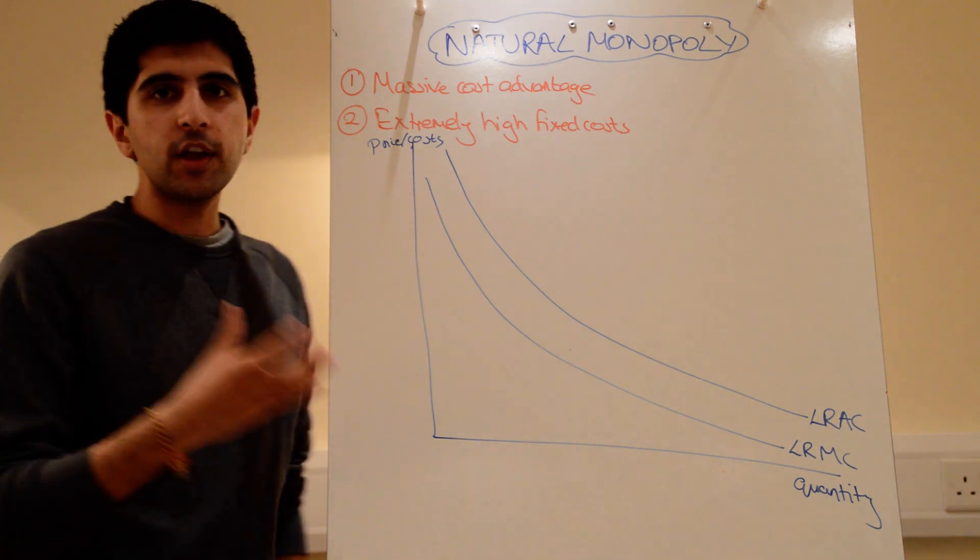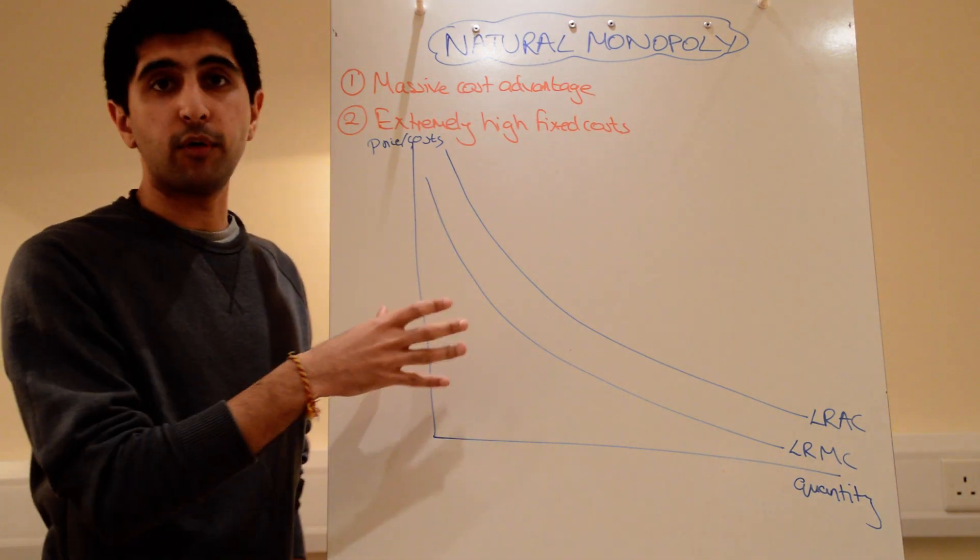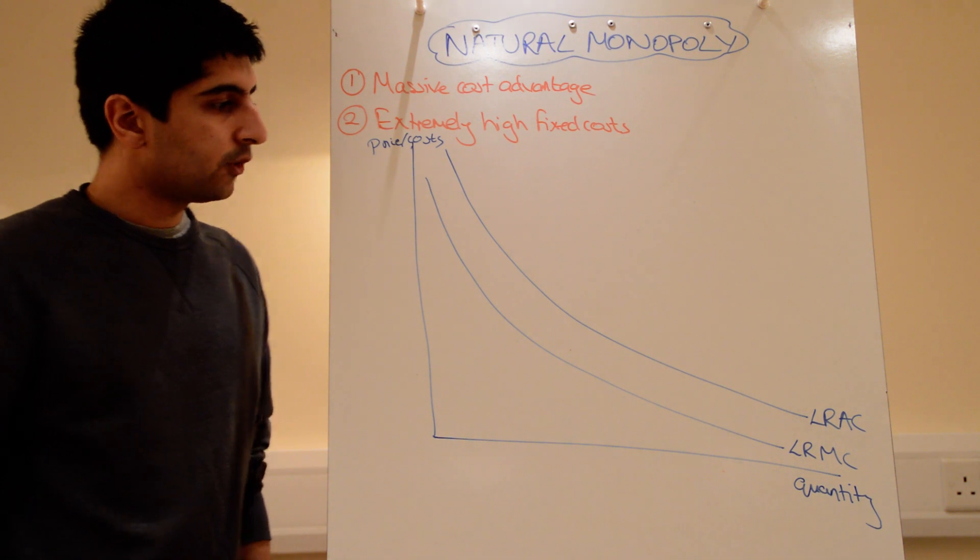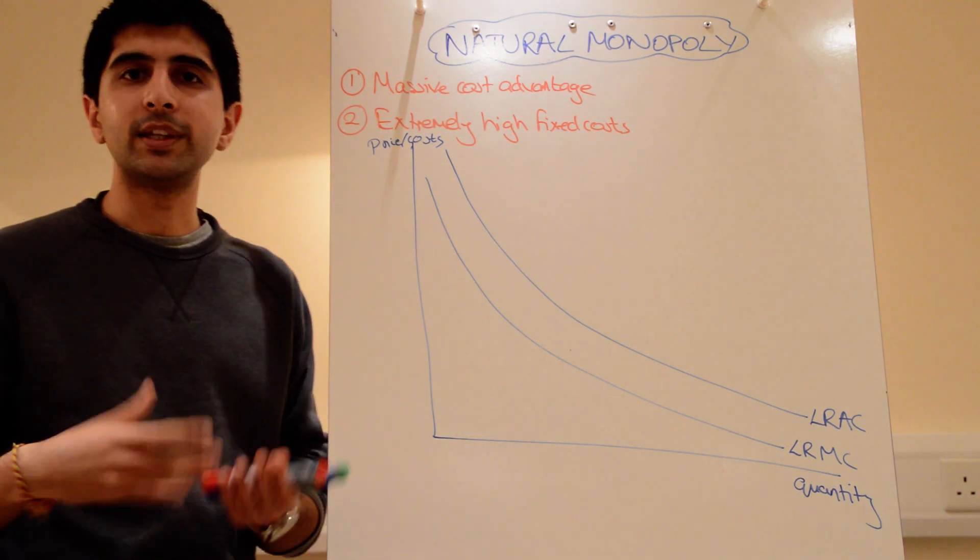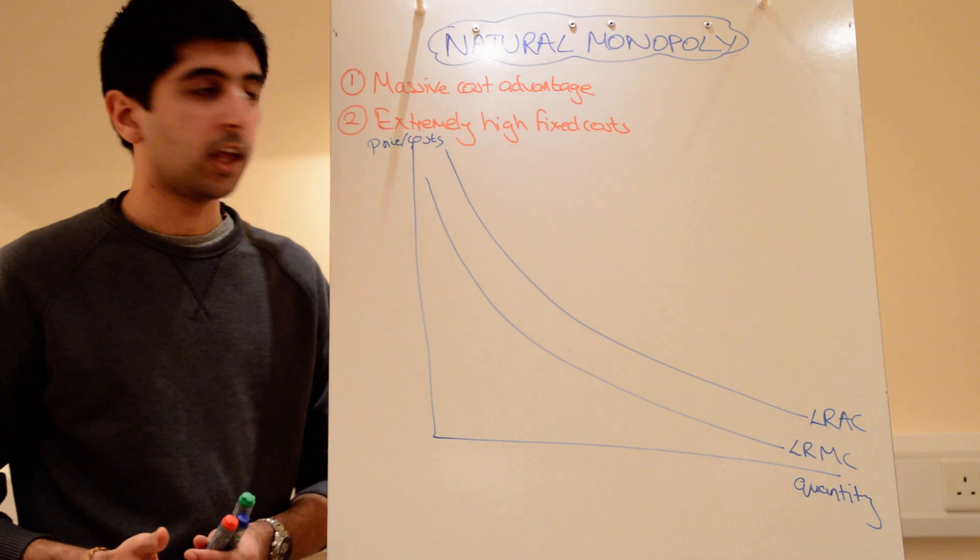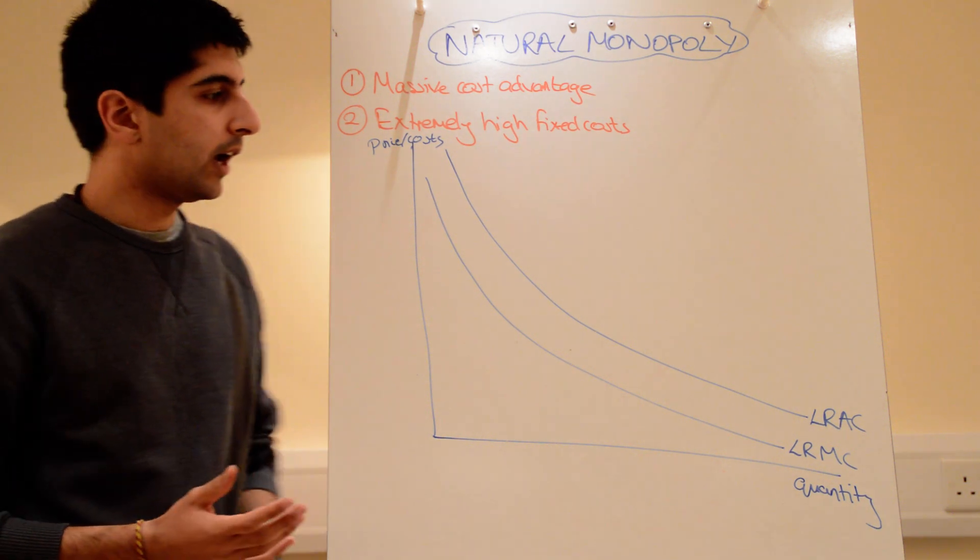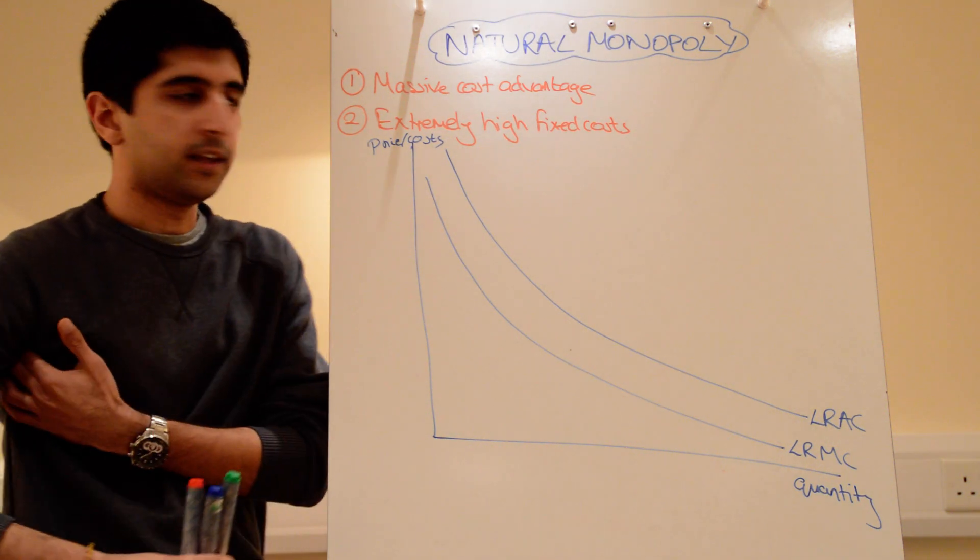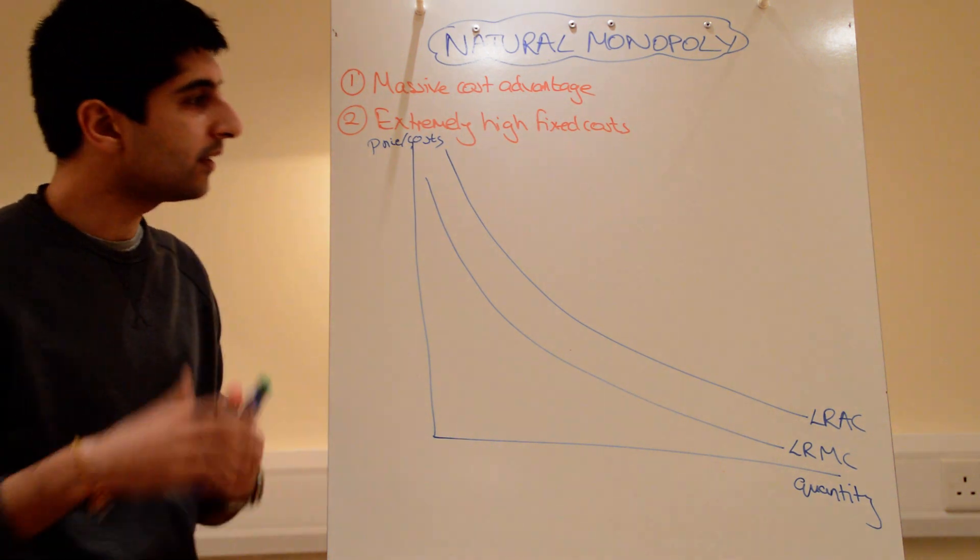There are very, very high fixed costs in the operation in this market structure. A good example of natural monopoly markets could be gas, the gas pipeline, water utility companies. These are all good examples of natural monopolies. The rail network, for example, is a natural monopoly.